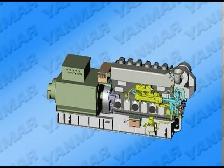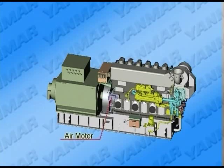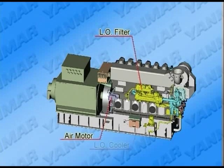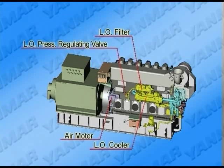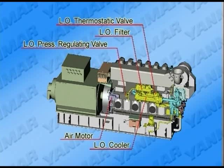When viewed from the anti-operation side, the anti-flywheel side, the air motor, automatic backwashing strainer of lube oil, lube oil cooler, lube oil thermostatic valve, and lube oil pump, etc., are laid out as shown here.